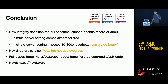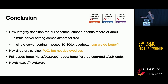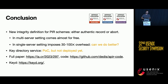In this work we introduced an integrity and authenticity definition for PIR schemes in both the single and multi-server settings: either the client gets the authentic record or the client aborts. In the multi-server setting this comes almost for free, as we saw. In the single-server setting there is a 30 to 100x overhead, so an open question is whether we can do better there. The key directory service is a working proof of concept, though not yet deployed. The full paper and open-source code are available at the links shown.